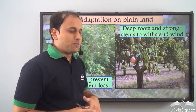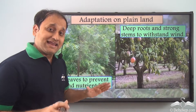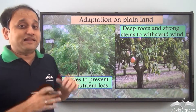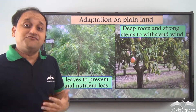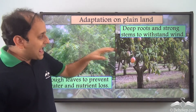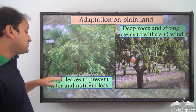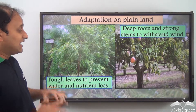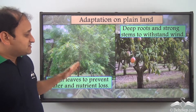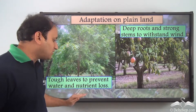Now let's come to adaptation on plainland. Apart from all the different conditions discussed, on plainland plants have deep roots and strong stems to withstand wind. Plainland has no protection from wind — there are no physical features which can stop strong winds from blowing. As a result, plants have deep roots and strong stems. Also, they have tough leaves to prevent water and nutrient loss, since on plainland trees are exposed to strong physical factors such as sunlight and wind.